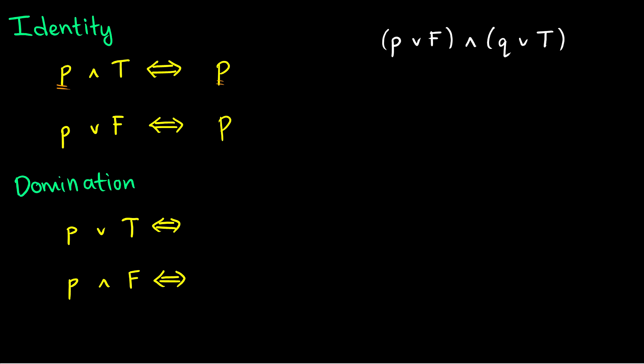Domination laws are a little different. Whatever P is doesn't matter: P∨T outputs true, because true is always true. P∧F outputs false, because false is always false. We can see how truth and falsity are dominating over our formula.